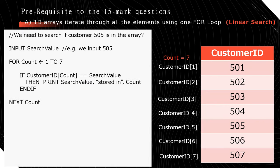Another important operation is iterating through the array in a linear search — searching for a particular value and checking if it exists. We use a for loop, but before starting, we input the search value. For example, we're checking if 505 exists in the array. After inputting the search value, we start: for count from 1 to 7, if CustomerID[count] equals the search value, then print that the search value is stored at that index. Next count.